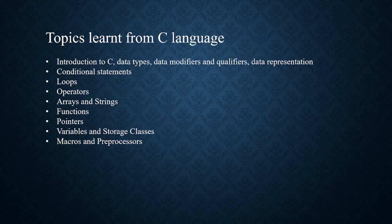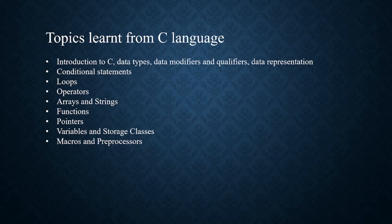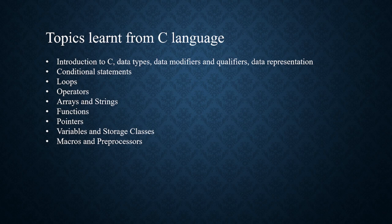There are different keywords and modifiers in data types including short, long, signed, unsigned. Based on code optimization, we use all these data types. Operators include arithmetic, logical, relational, assignment, and bitwise operators. There are arrays like single-dimensional and multi-dimensional arrays for the same data types, used for reading, storing, initializing, and copying data. These are the topics we actually learned in C, taught to us step by day.